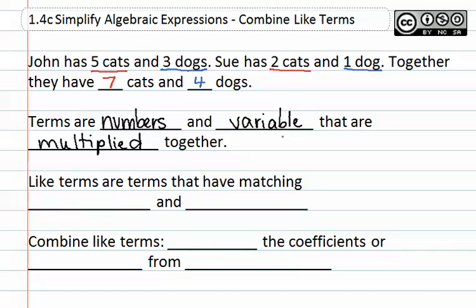An example of this would be something like 4X. It is a number and a variable that are being multiplied together and called a term. Like terms are terms that have matching—the keyword here is matching—variables and exponents.